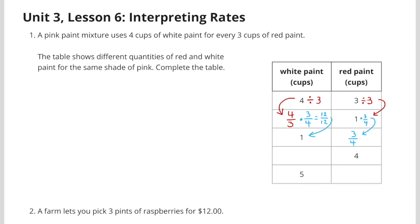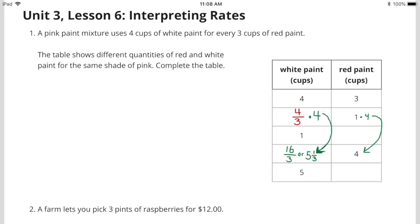Next, I'd have to multiply the 1 cup of red paint by 3 fourths. 1 times 3 fourths is 3 fourths. You notice the 4 in the red paint column. I already have 1 cup, so I can multiply that 1 cup by 4 to get 4 cups of red paint. Next, I'd have to multiply 4 thirds times 4 to get 16 thirds. 16 thirds is also equal to 5 and 1 third.